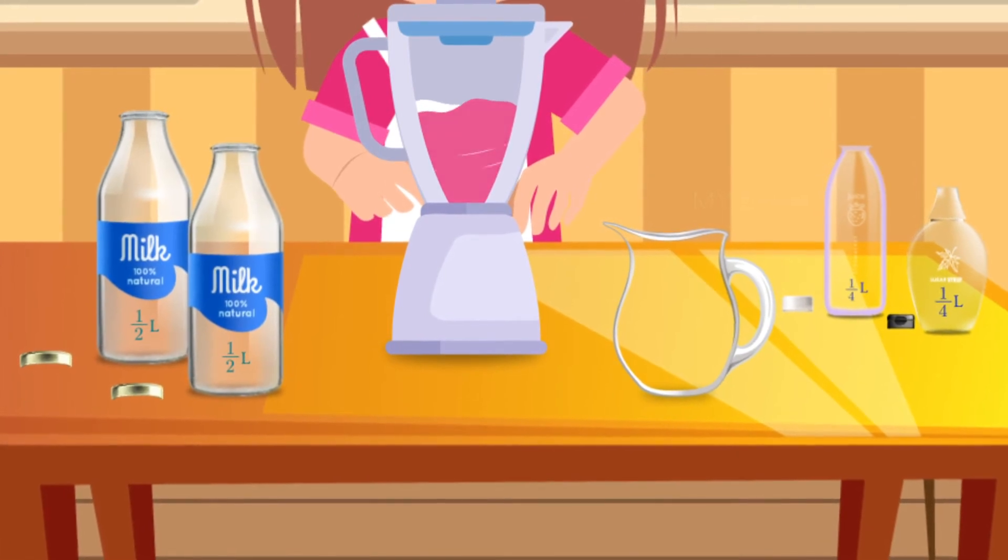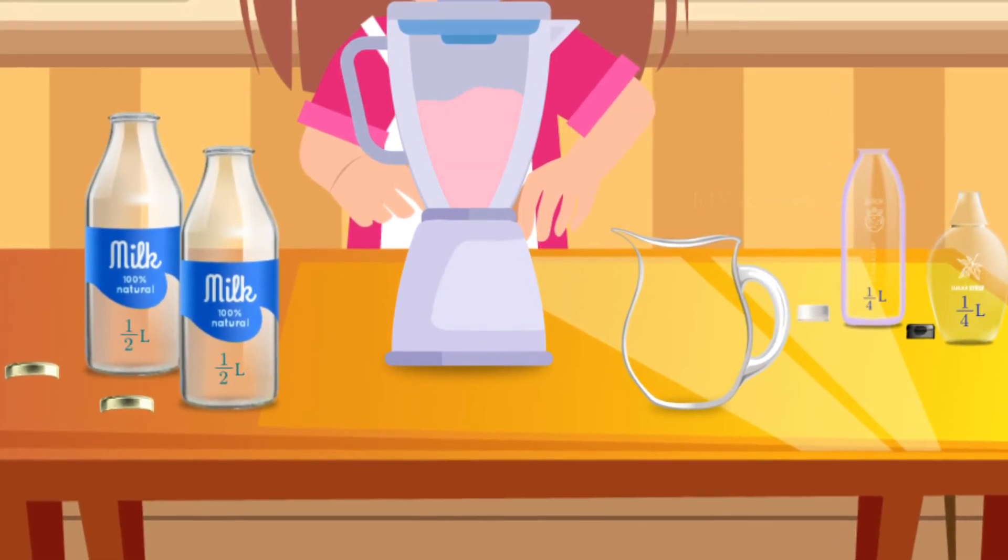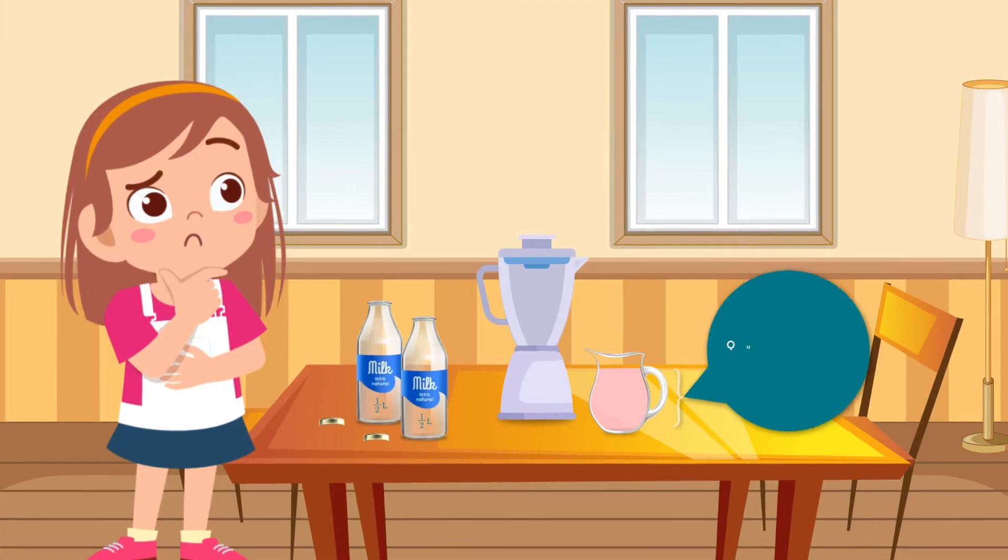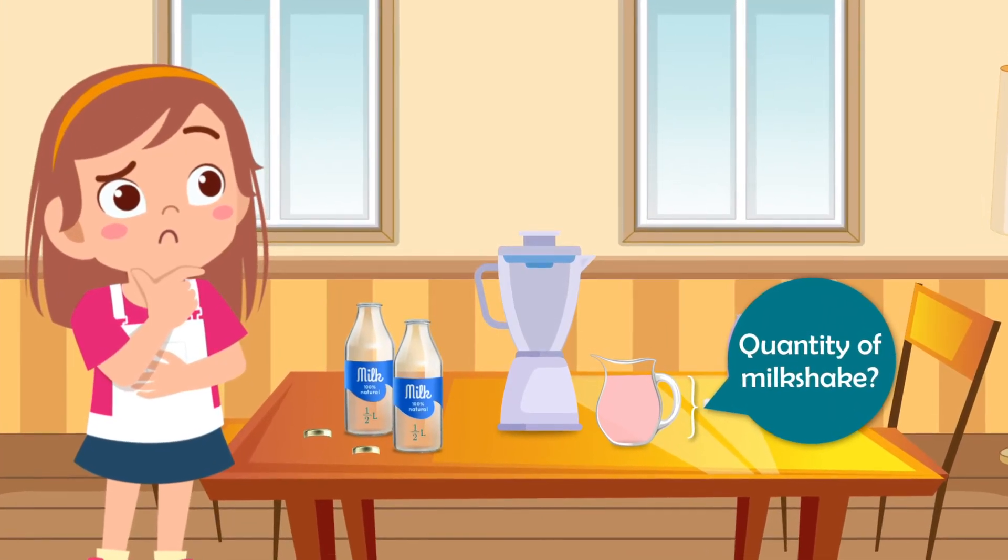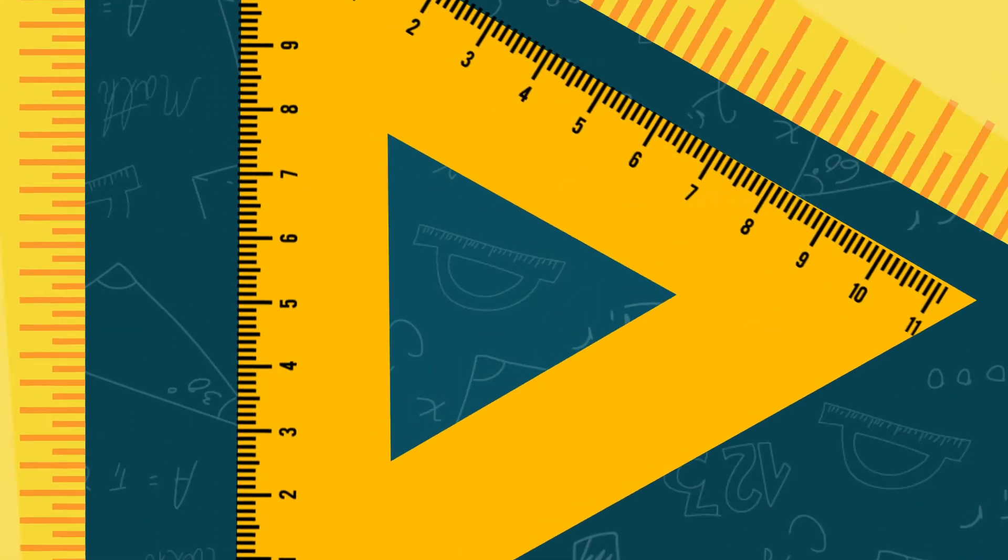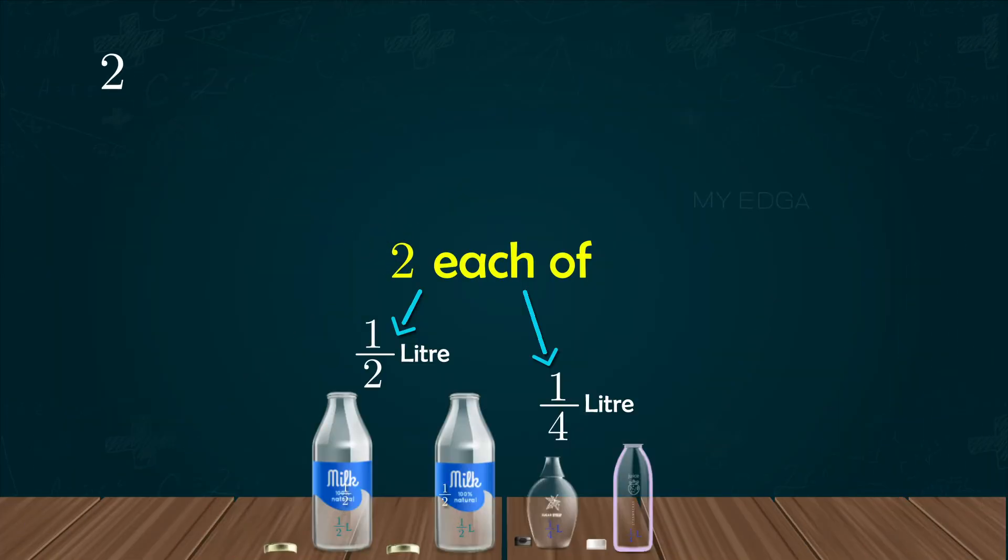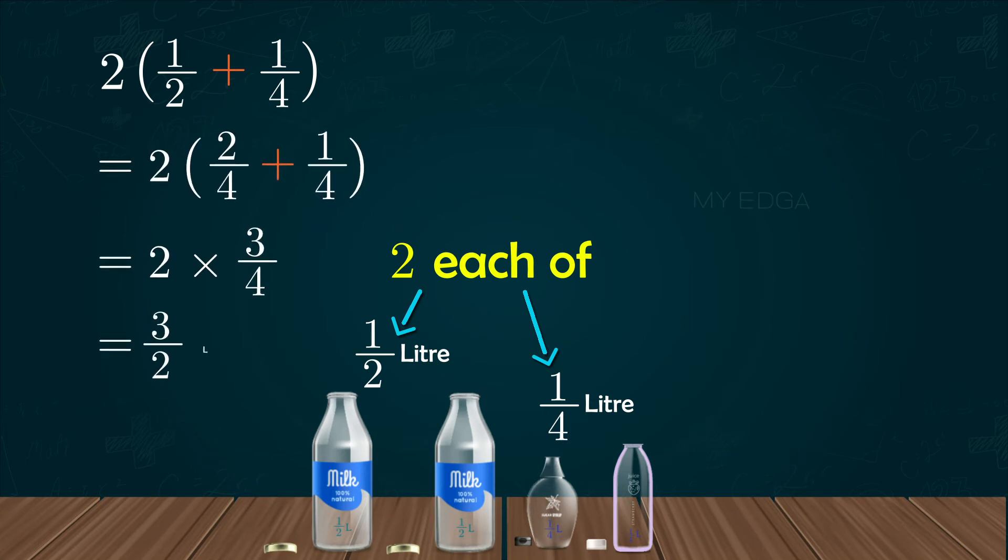She blended the ingredients and made a delicious milkshake. Can you find the quantity of the milkshake? It's 2 into (1/2 + 1/4) equals 3/2 liters.